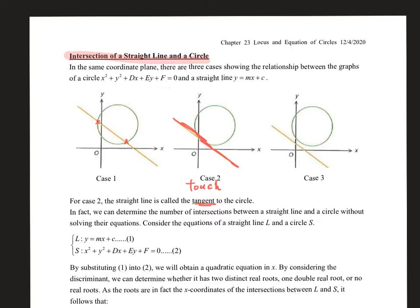Just like when we talk about quadratic equations and how many roots there are, delta will help us determine how many points of intersection or solutions we have. In case one, two points of intersection, delta is greater than zero. When the line and circle touch, delta equals zero — one point of intersection. In the last case, delta is less than zero because there are no points of intersection.